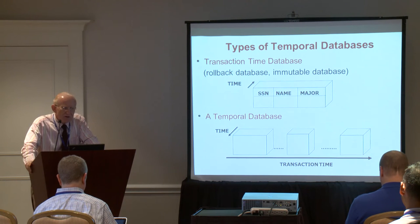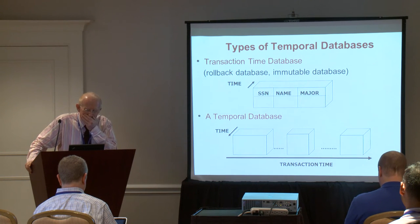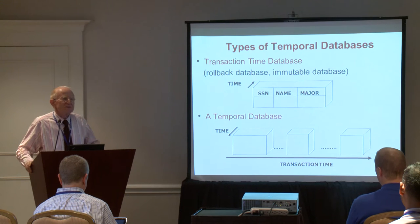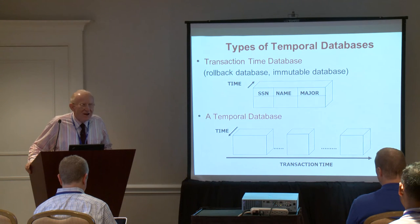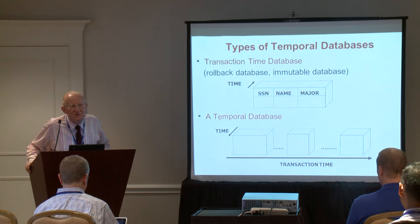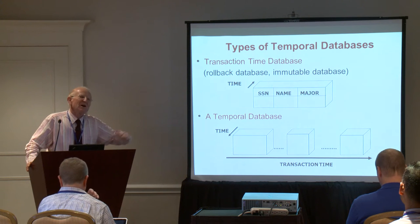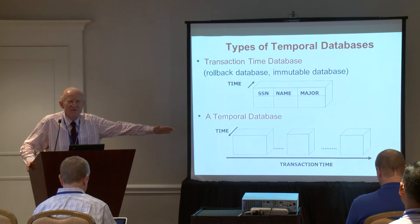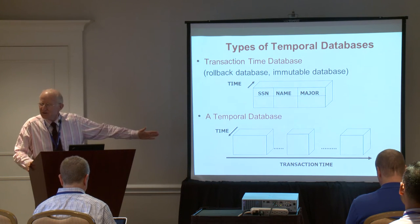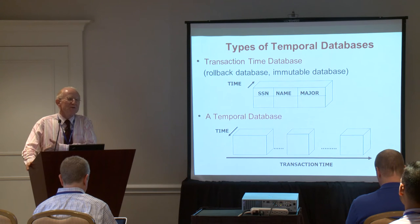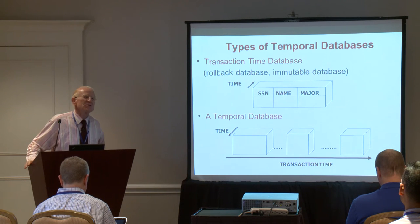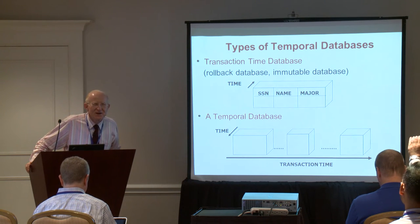The third type is called a rollback database, or transaction time database. Nowadays it is very popular as immutable databases: as transactions occur, they are recorded, and there is no update — only insertion of new transactions. That is an immutable database.